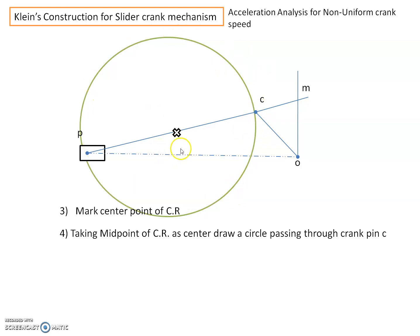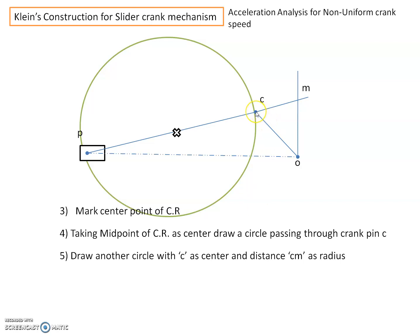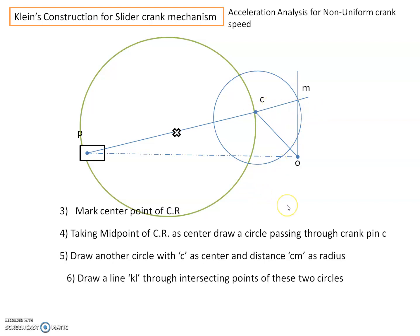This circle, centered at the midpoint of connecting rod PC, will automatically pass through crank pin C. Next, draw another circle with center at crank pin C and radius CM. Then draw a line through the intersecting points of these two circles and name that line KL.